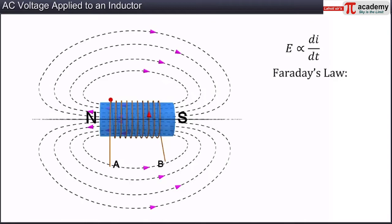According to Faraday's Law of Electromagnetic Induction, the induced EMF in an inductor is equal to minus L di by dt, where L is the self-inductance constant for the inductor, and I is the amount of current passing through the coil. This EMF opposes the change in current flow through it in accordance with Lenz's Law. Hence, a minus sign as per convention.